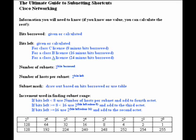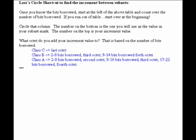The third row is what I call the subnet mask row. The subnet mask is determined by looking at the table. Once you know the bits borrowed, you can start at the left of the table and count over the bits borrowed. So let's say we have three bits borrowed — I start at the left of the table, count over three columns, and I circle the column that says 2 to the 5th, 32, and 2 to the 4th. Lori's circle shortcut states that once you circle that column, the number on the bottom is the one you'll use in the value of your subnet mask, and the number on the top, second row, is your increment value. You'll use that increment value to find the network address for the subnets.